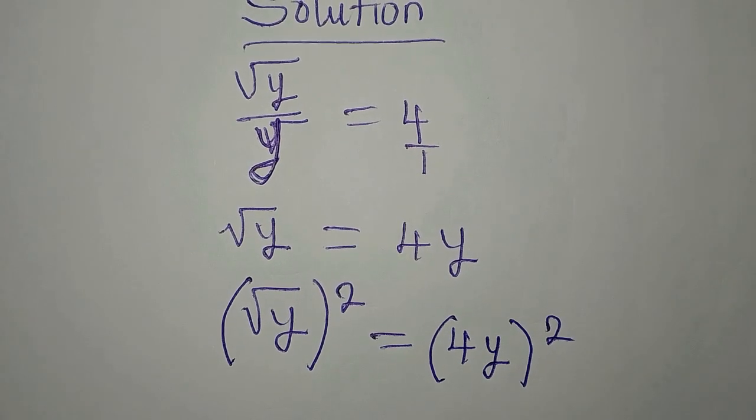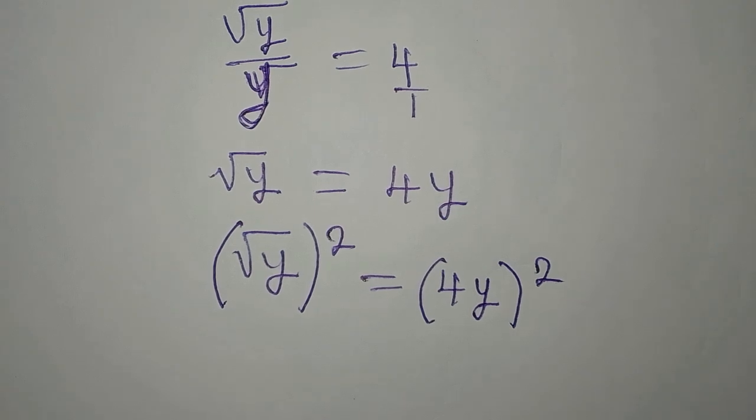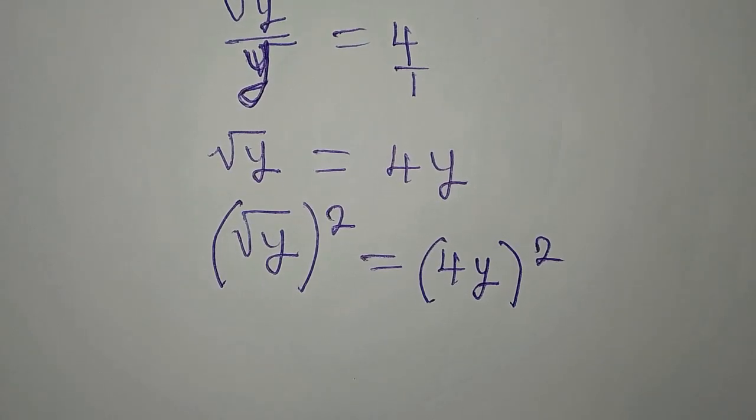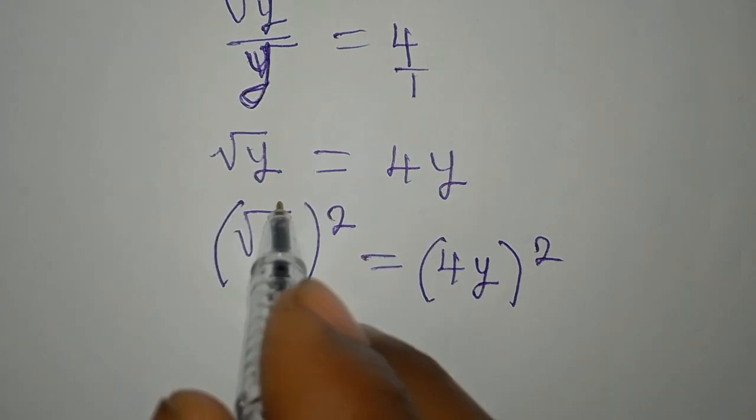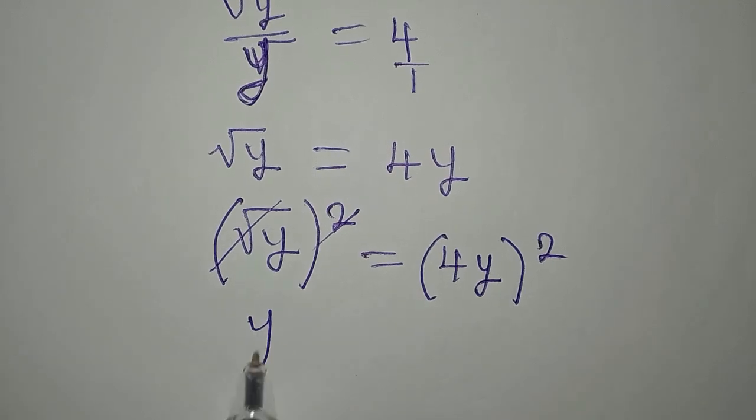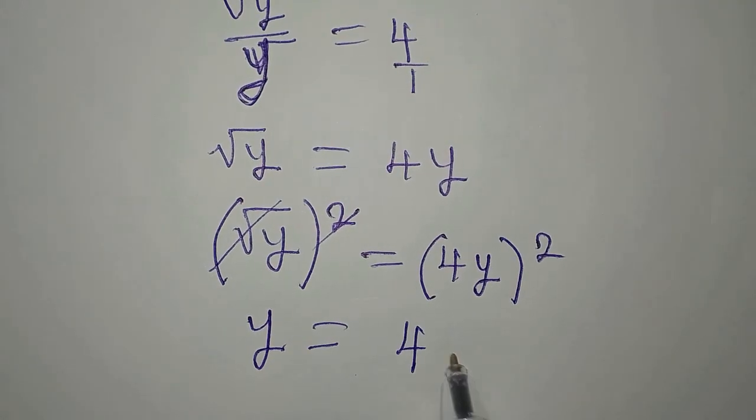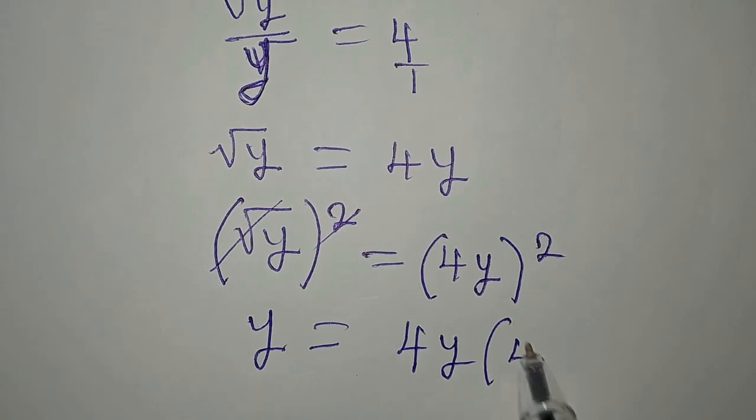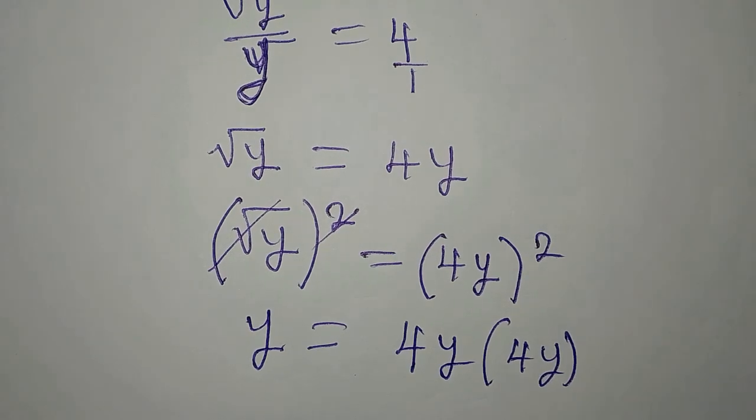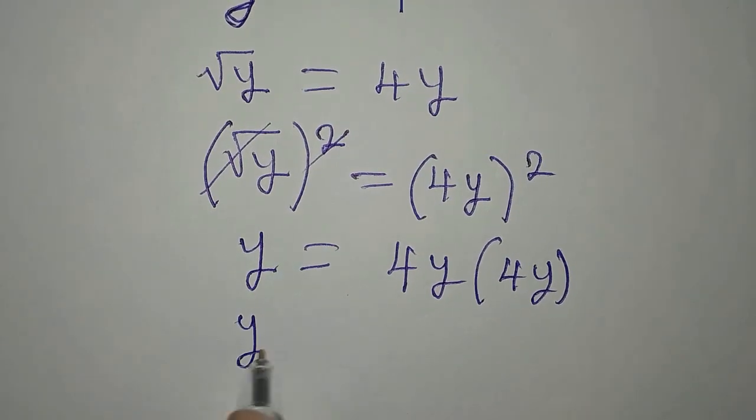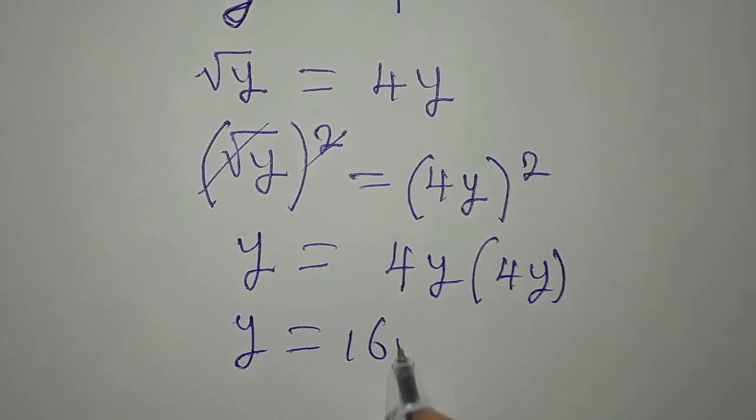So we have 4y in brackets squared. If I remove these brackets then I have a wrong solution, I will be making a mistake. So now this is going with this, so that y is equal to 4y multiply by 4y.